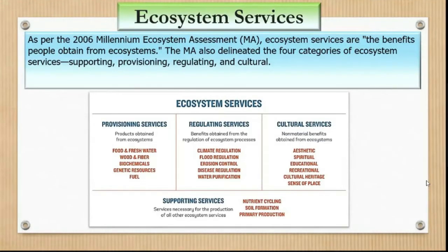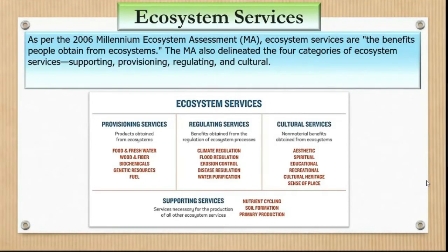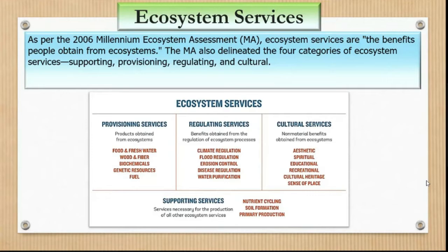The second category is regulating services — benefits obtained from the regulation of ecosystems. One important example is climate regulation. When I was studying in New Delhi, our campus was very green and there was a temperature difference of five degrees — outside it was 40°C while inside the campus it was 35°C. This practically demonstrated how a small patch of forest cover can regulate the climate of a particular place. More forests means more rain and better climate regulation, helping handle the impacts of climate change.